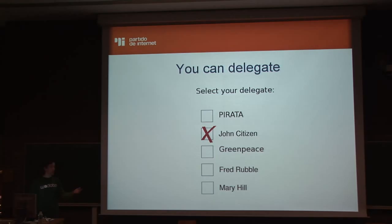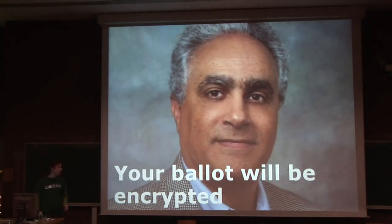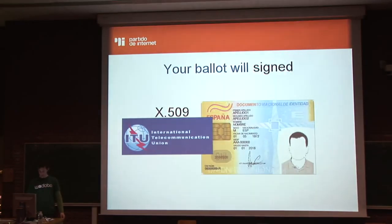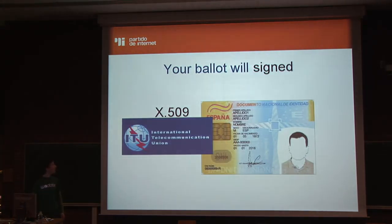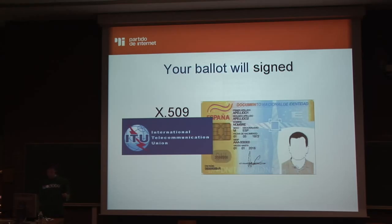Then voting starts. You can either delegate your vote or directly vote. When you vote over the internet, your ballot is encrypted using El Gamal, which is a standard encryption method. It will then be signed using national electronic identification cards in Spain, which use standard protocols and are secure. The vote is encrypted so no one knows what you voted, but it will be signed so everyone knows it's your vote.